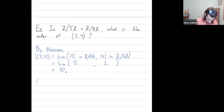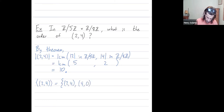Computing the order of an element is almost like finding the cyclic subgroup it generates. So first we have the element (2,4). Add (2,4) to get (4,8), but 8 is 0 in Z mod 8Z, so we get (4,0).